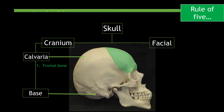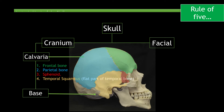Likewise, the calvaria can also be divided into the following five bones: the frontal bone, the parietal bone, the sphenoid bone, the temporal squamous which is the exterior flap part of the temporal bone, and the squamous occiput which is the flat lower part of the skull.